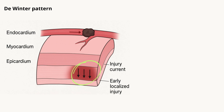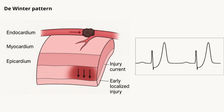On the other hand, in the De Winter pattern, only the inner layer — the subendocardium — is getting damaged, not the full myocardium, not the epicardium. That's the reason instead of the injury current shifting upward, it shifts downward. This is why you see tall symmetrical T waves after the J point specifically, and ST depression rather than elevation.